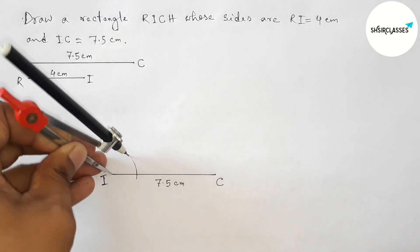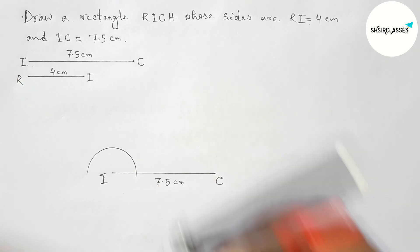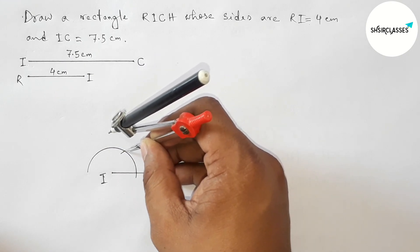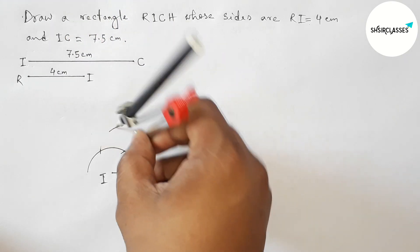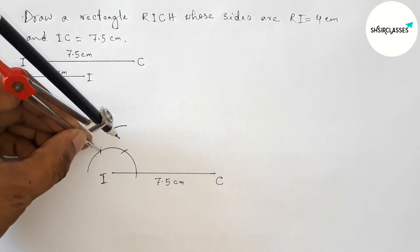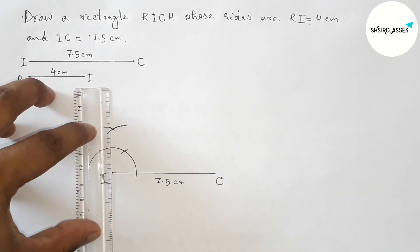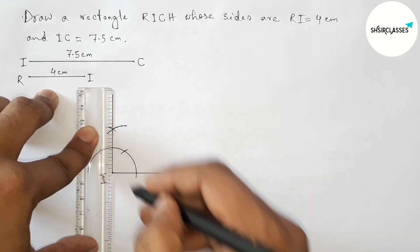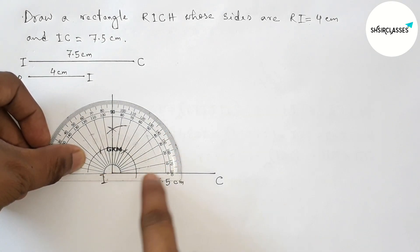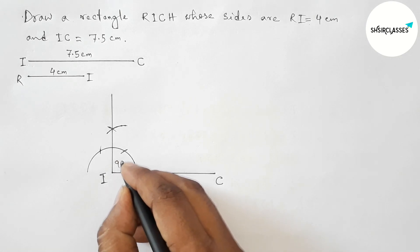Putting the compass and taking any length, first drawing an arc. Now putting the compass here and taking the same length, cutting here, then putting the compass here and cutting here, drawing an arc with the same length. Joining these points to get a 90 degree angle. Checking whether it is 90 degrees — yes, this is perfectly a 90 degree angle.